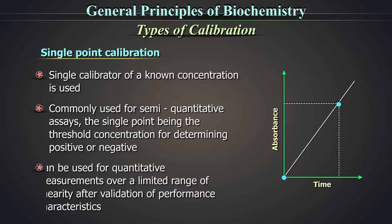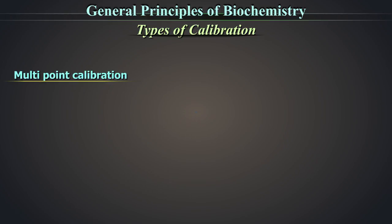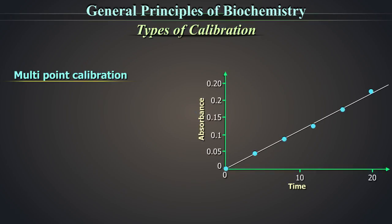This can be used for quantitative measurements over a limited range of linearity after validation of performance characteristics. Multi-point calibration: Two or more different calibrator concentrations are used. The calibrator should preferably span the entire range of analytical values for the given analyte.